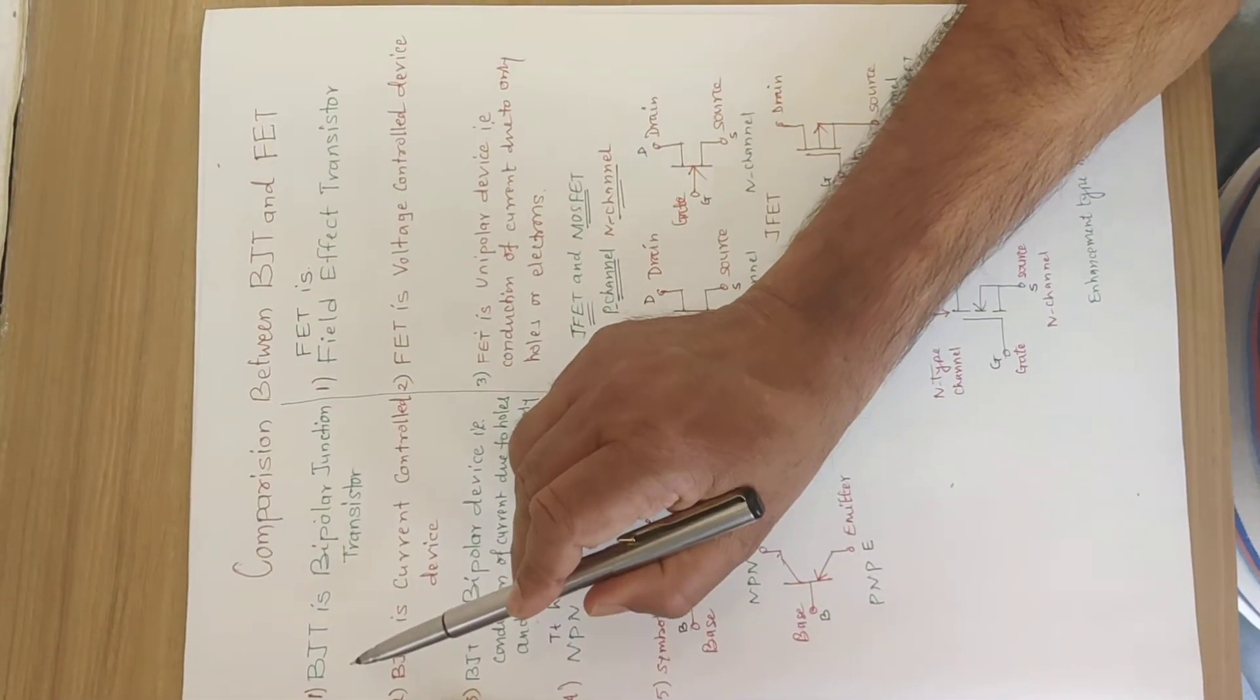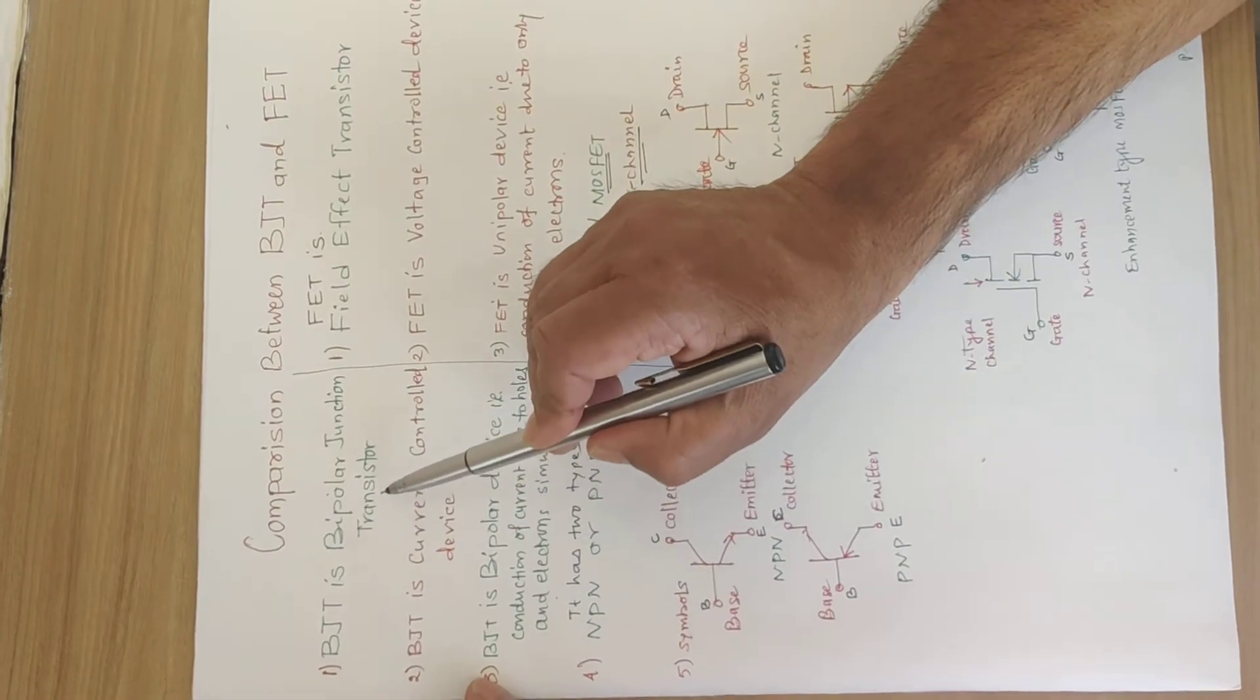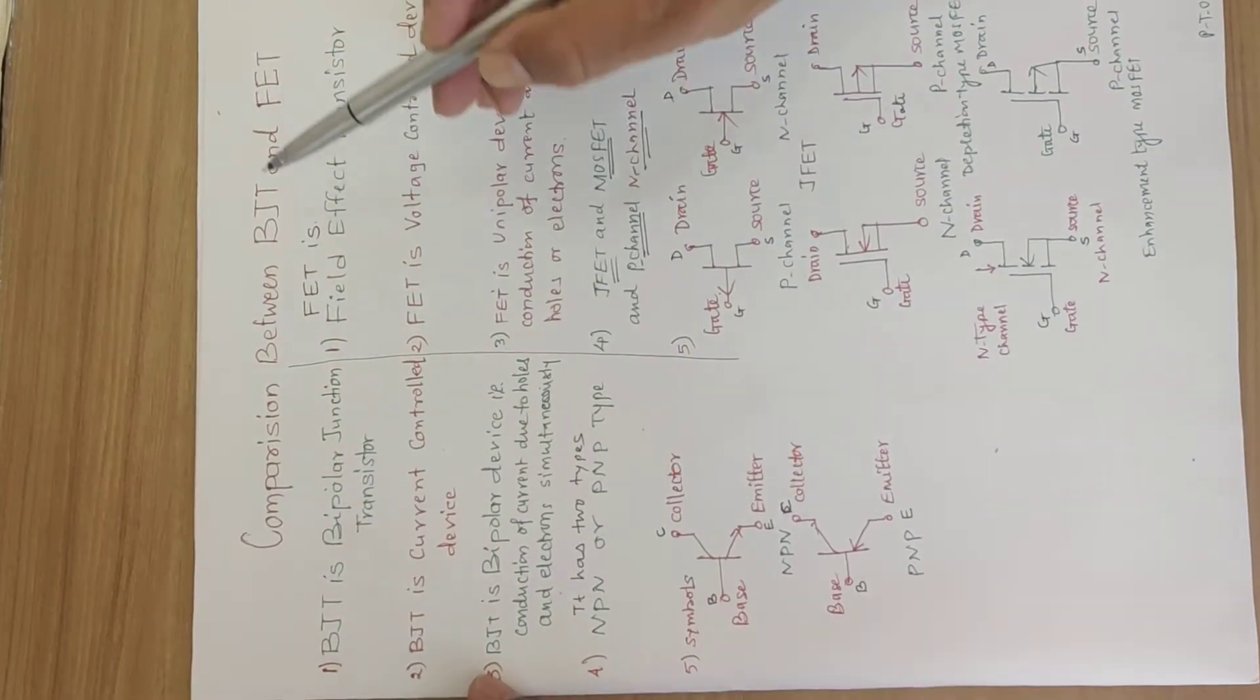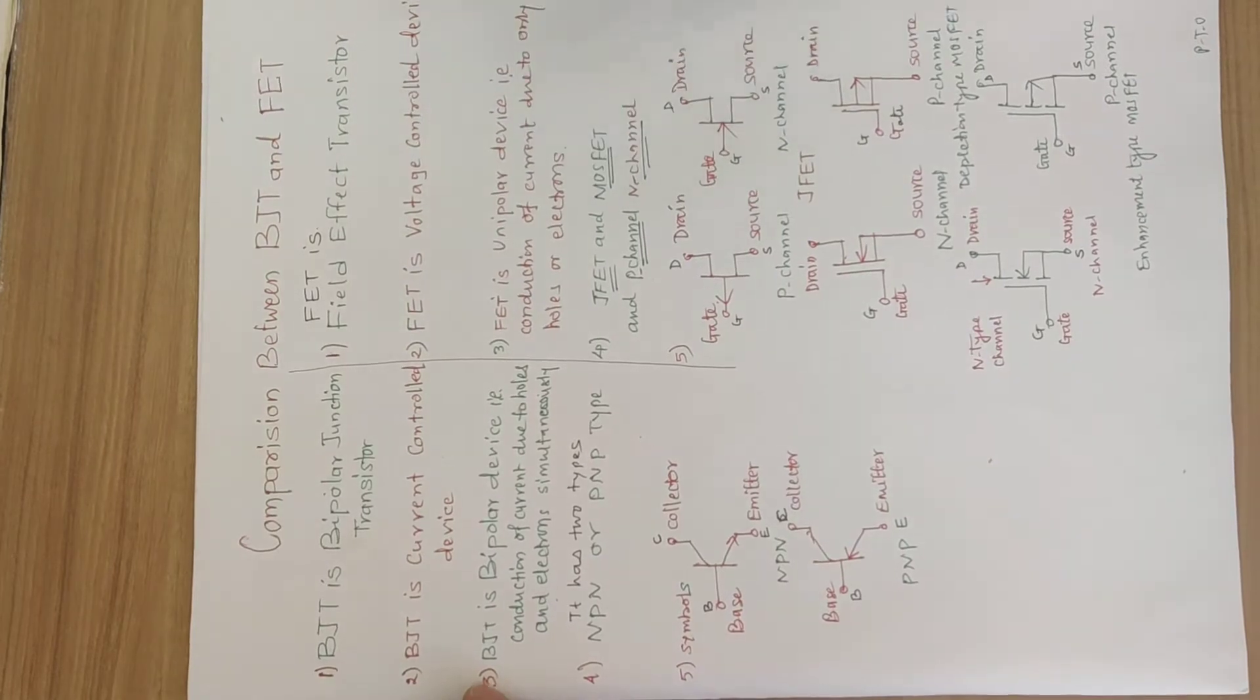Long form of BJT is bipolar junction transistor and for FET it is the field effect transistor.